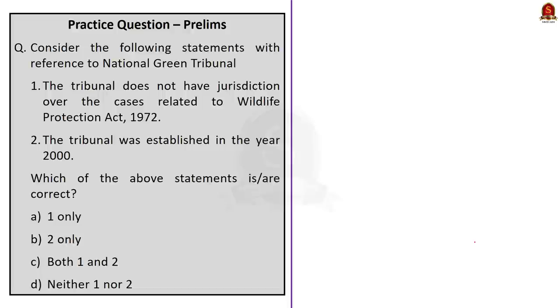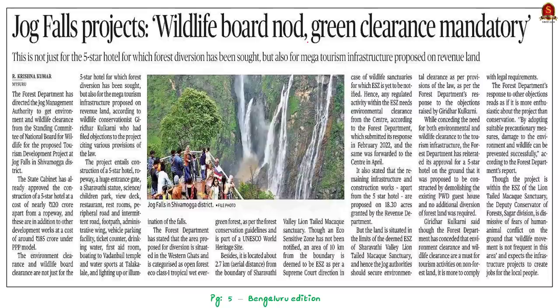We have seen about the National Green Tribunal in detail, which will be very useful for your prelims. With these key points in mind, let's move on to the next news article. This article says that the Forest Department has directed the Jog Management Authority to get environment and wildlife clearance from the Standing Committee of the National Board for Wildlife.